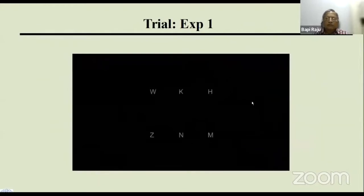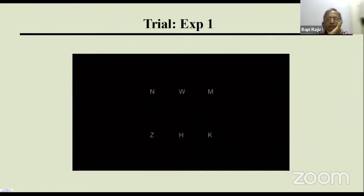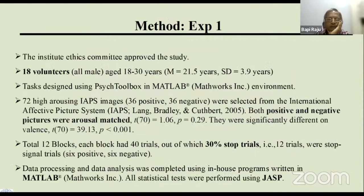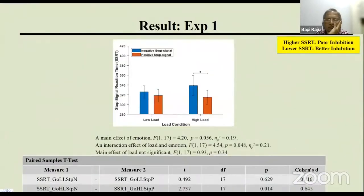Here is a trial running — you can see these are the go trials with no stop signal, and this is the stop trial. These are some general details: the study was approved by the ethics committee, volunteers participated, both positive and negative picture sets were used, there were 30% stop trials and 70% go trials, and data processing was completed in MATLAB with statistical analysis done in R.